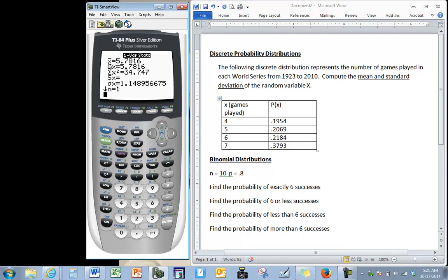X bar is our mean, so the mean of this probability distribution is 5.7816. So if the world series is played many times we would expect that on average it will last about 5.7816 games, and our standard deviation is 1.1 games.